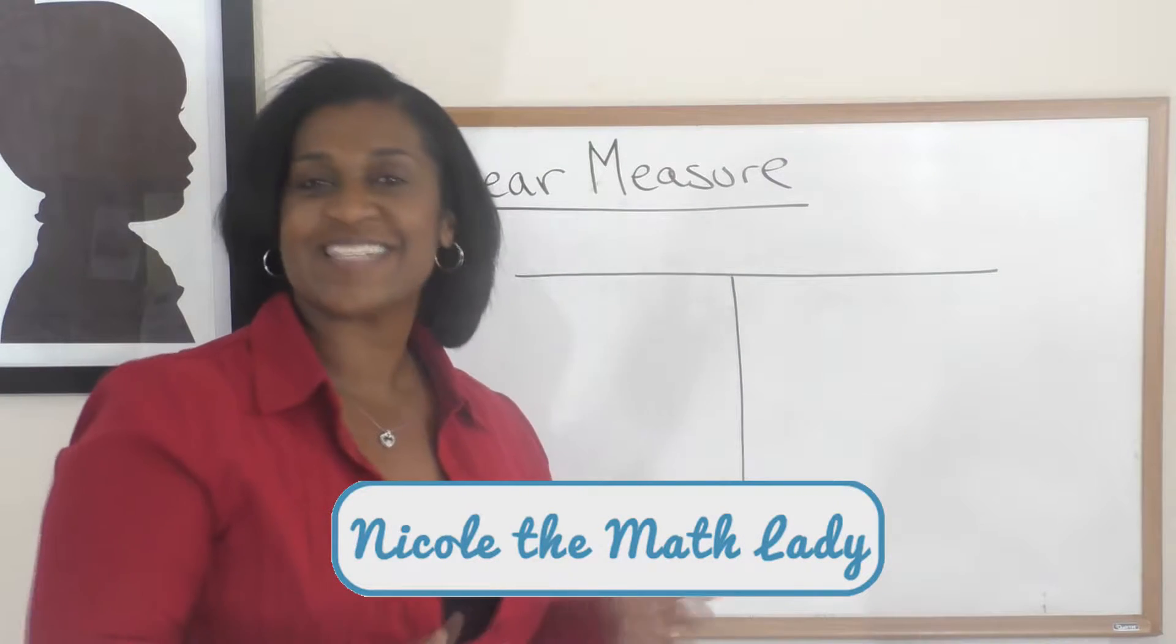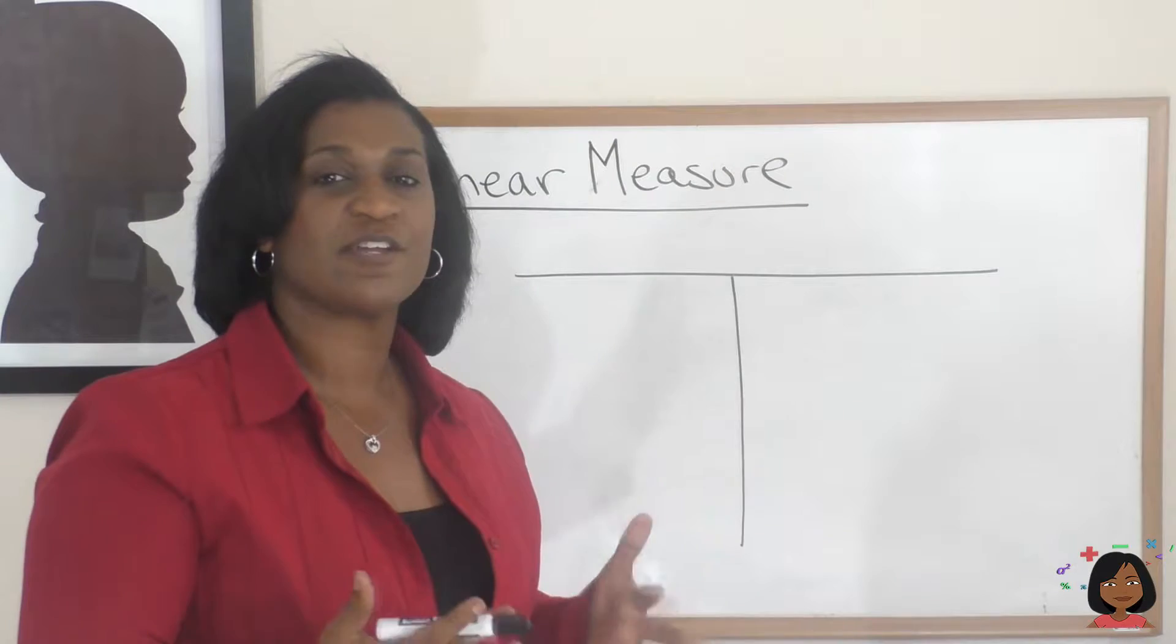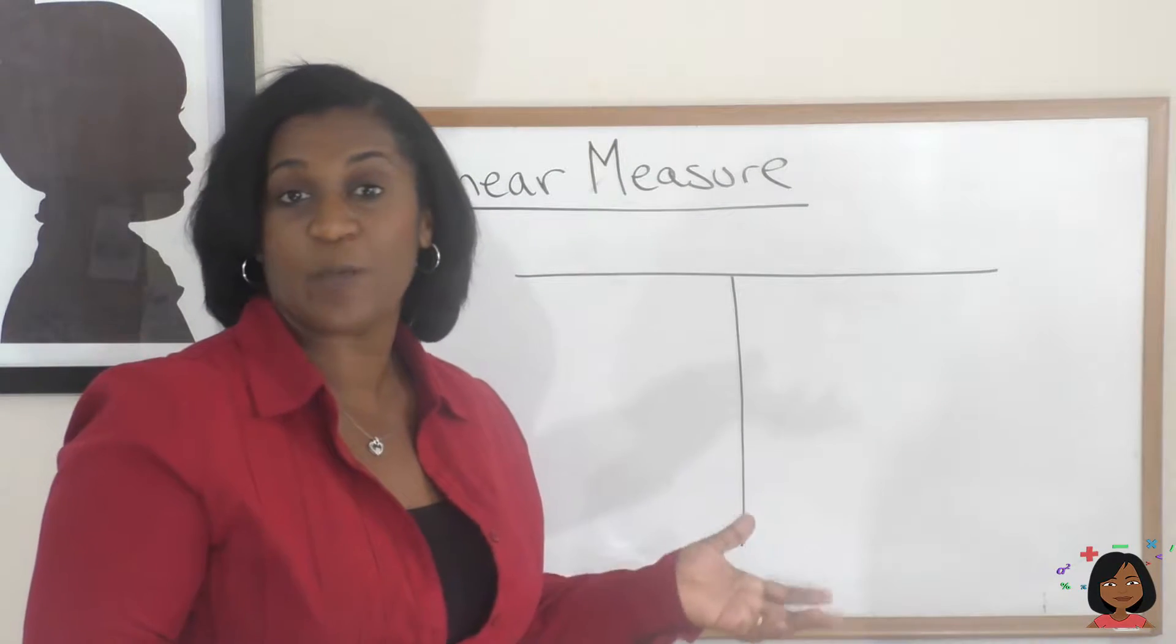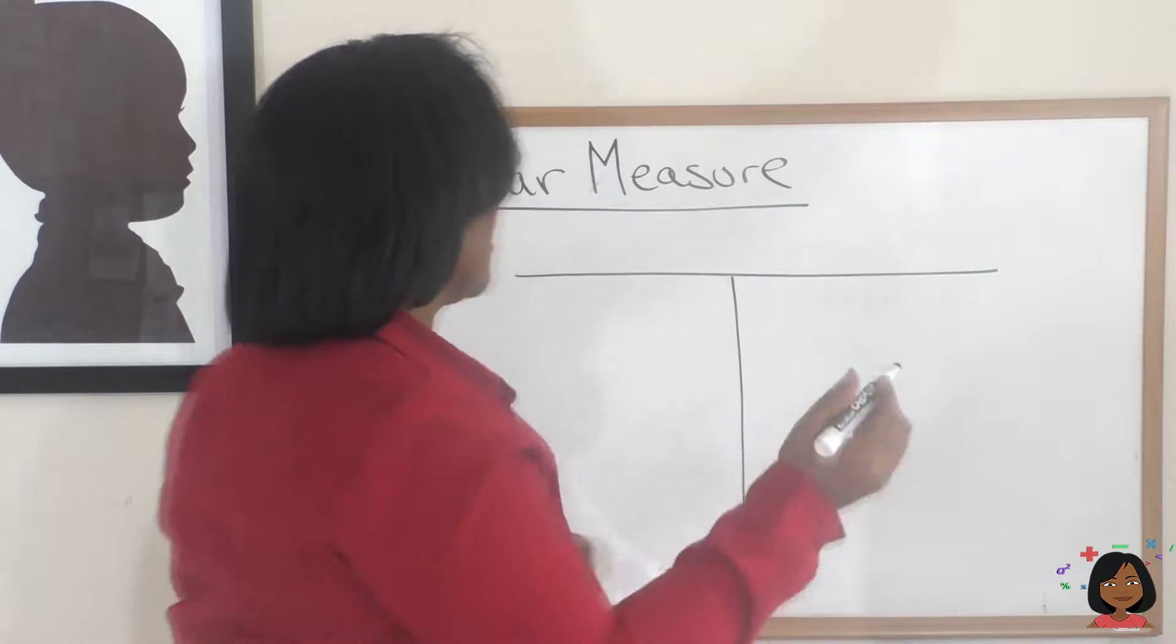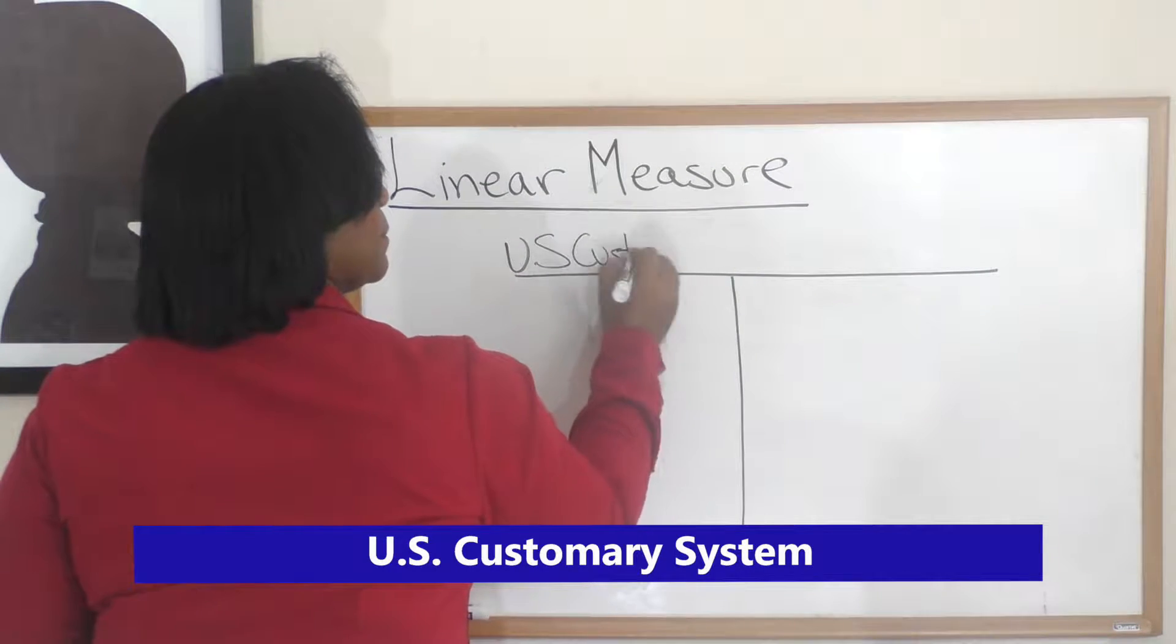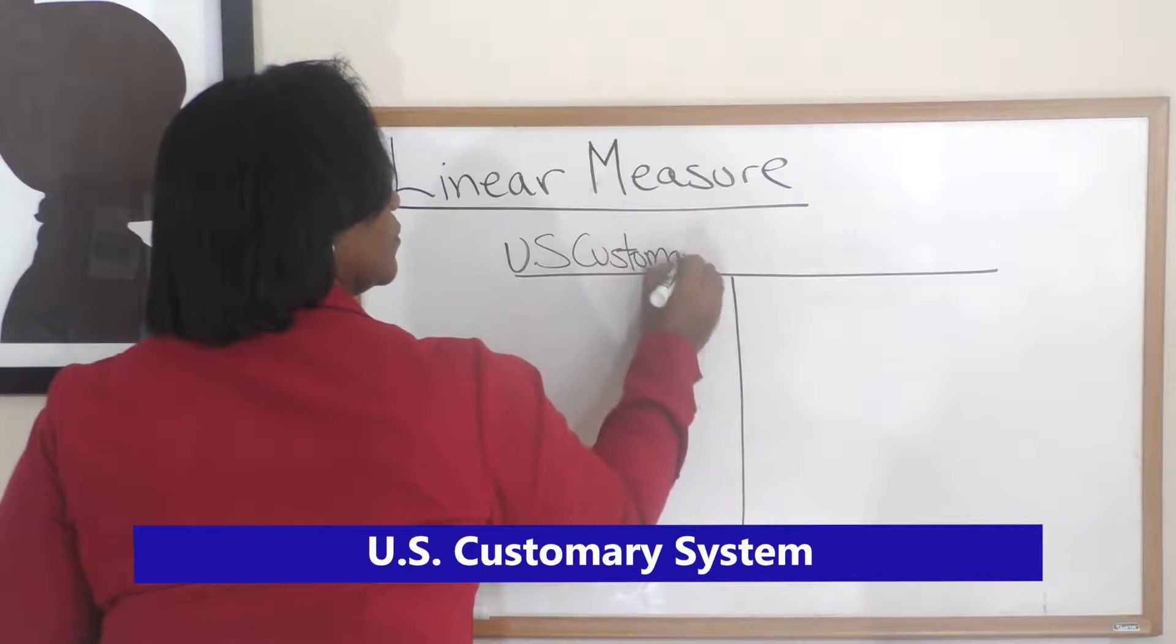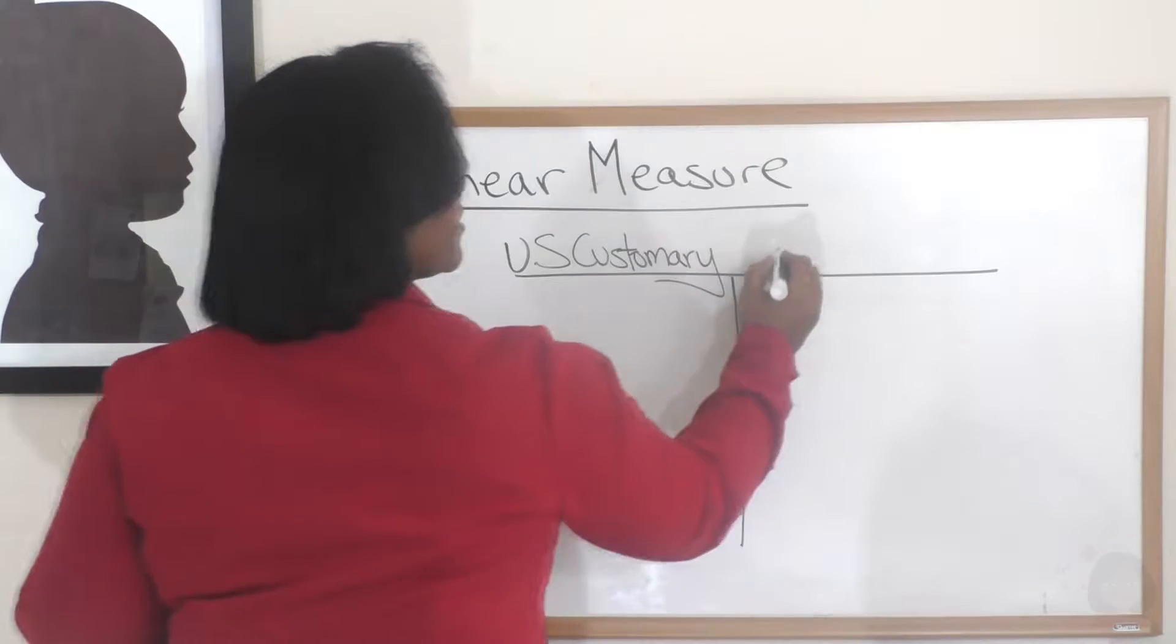Hi, it's Nicole the Math Lady and today we're talking about linear measure. Generally speaking, there are two types of linear measure that we use to measure the length of things. We have one system called the US customary system and the other system called the metric system.